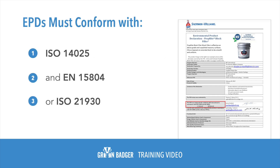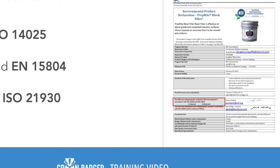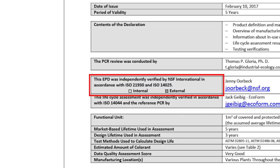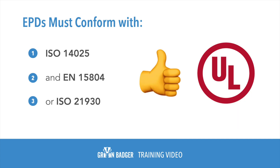Lastly, EPDs need to demonstrate that they conform to ISO 14025 and EN 15804 or ISO 21930. You don't need to know what those ISO standards mean, but your EPD needs to say that they were done in accordance with them. We've seen a whole lot out there that say they meet ISO 14025, but don't reference EN 15804 or ISO 21930. These are getting comments from USGBC in the review process, though they've still been accepting them due to independent research with program operators. Here's looking at you, UL.